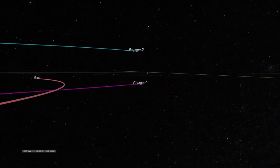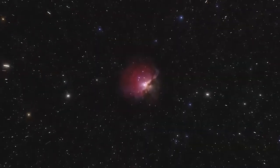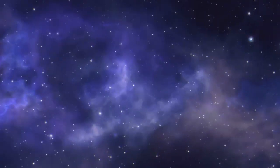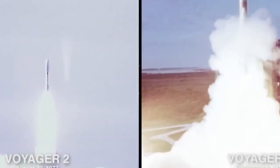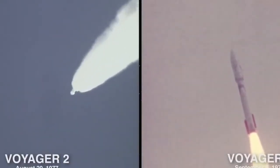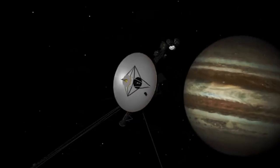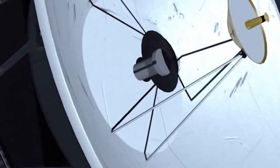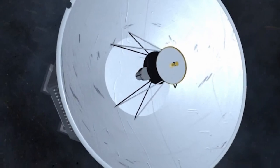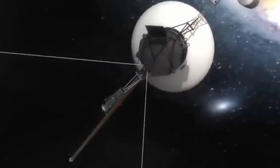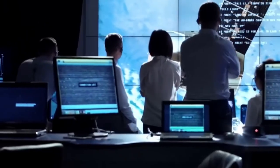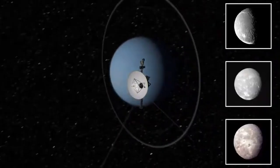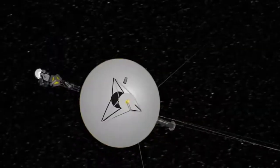these spacecraft could be revealing phenomena that challenge our current understanding of the universe and its myriad mysteries. In 1977, NASA launched Voyager 1 and Voyager 2 with a primary mission to explore Jupiter and Saturn. Equipped with the most advanced technology of their time,